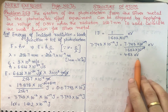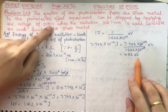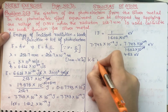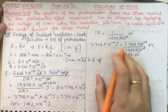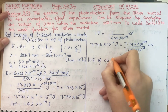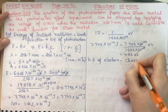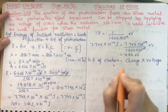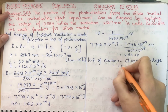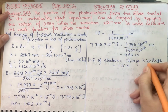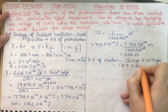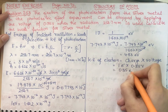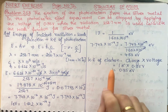Now we have the energy of incident radiation = 4.83 eV, and the stopping voltage given is 0.35 volt. We need to find the kinetic energy of the electron. Kinetic energy equals charge × voltage. Taking the magnitude of electron charge as 1e, kinetic energy = 1 × 0.35 = 0.35 electron volt.